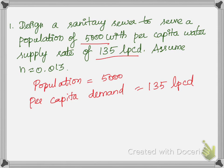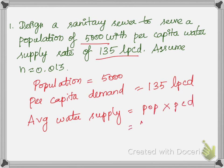For one person to survive for one day, 135 litres of water is needed. Since only population and per capita demand are given, we first calculate the average water supply, which is population multiplied by per capita demand: 5000 × 135 = 675,000 litres.